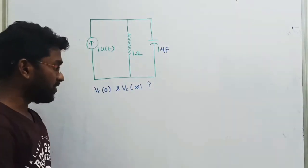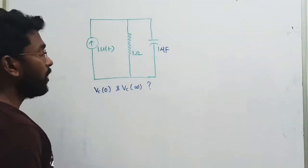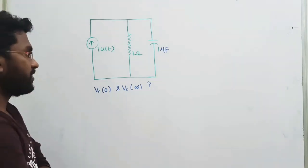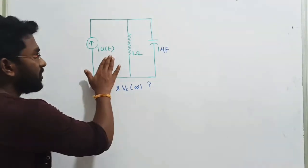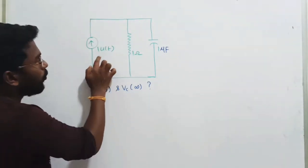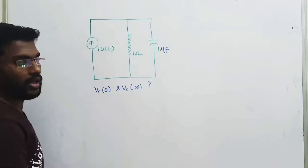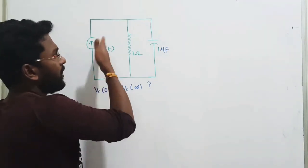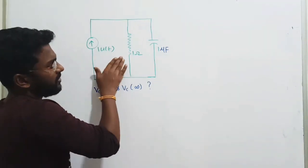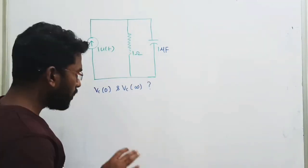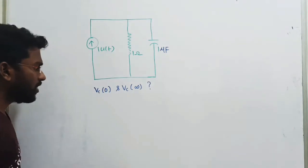Hello guys, let us see this question. The question I'd like to talk about is that there is a current source. That value is 1 into u(t), that is the R. And it will be connected with the resistor and the capacitor combination.